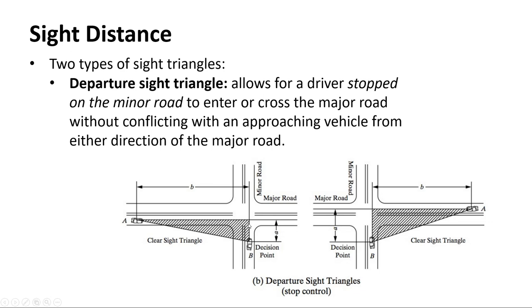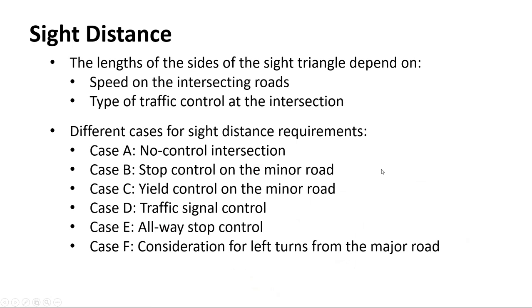The departure sight triangle is measured from the stopping point. As you depart from that stop, what clear area do you need? Here's the sight triangle for cars approaching from the left, and here's the sight triangle for cars approaching from the right. Distance B is labeled the same in both directions in this model, but when a car is approaching from the right the B term actually changes, so don't let the diagram throw you off.